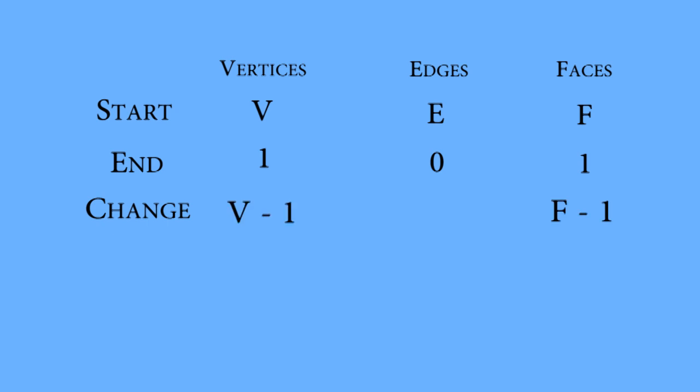So the original number of edges, E is equal to V plus F minus two, which implies that V minus E plus F equals two.